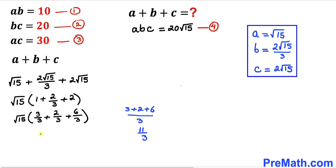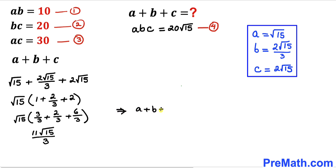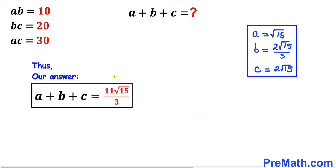So this simplifies to 11 times the square root of 15 divided by 3. Therefore our final answer is a plus b plus c equals 11 times square root of 15 divided by 3. Thanks for watching and please don't forget to subscribe to my channel for more exciting videos.